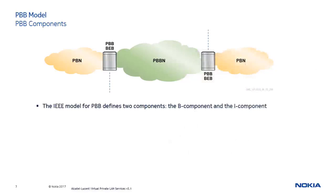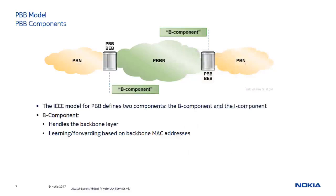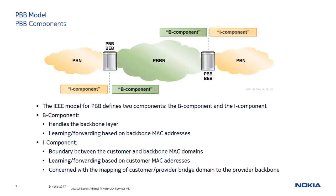The IEEE model for PBB is organized around two components: the B component and the I component. The B component handles the backbone layer and is responsible for learning and forwarding based on the backbone MAC addresses. The I component defines the boundary between the customer and backbone MAC domains and is responsible for learning and forwarding based on the customer MAC addresses. It maintains a forwarding table that maps the customer MAC to an appropriate backbone MAC address and uses this information to build PBB frames to be forwarded into the PBBN. It will also identify the customer and convert PBB frames back into customer frames.